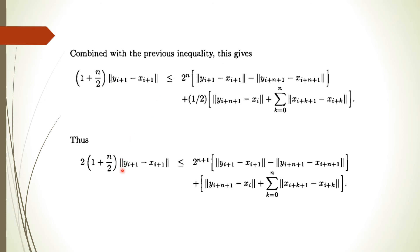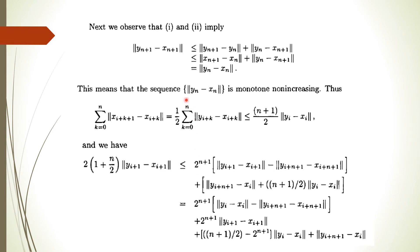We multiply both sides by 2, so the left side becomes twice the previous expression, the power becomes 2^{n+1}, and the factor of one-half is removed. Next, from conditions 1 and 2 we observe that the norm of y_{n+1} - x_{n+1} is less than or equal to the norm of y_n - x_n, after adding and subtracting y_n and applying condition 2. The two x_{n+1} terms cancel, leaving the norm of y_n - x_n. So this sequence is monotonically decreasing.